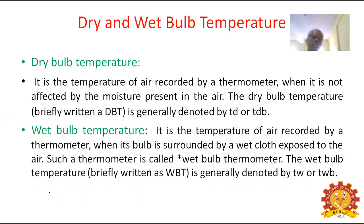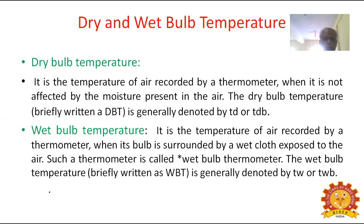Next we are going to discuss dry and wet bulb temperature. Dry bulb temperature is the temperature of air recorded by a thermometer when it is not affected by the moisture present in the air. DBT represents dry bulb temperature, generally denoted by T suffix D or T suffix Db.